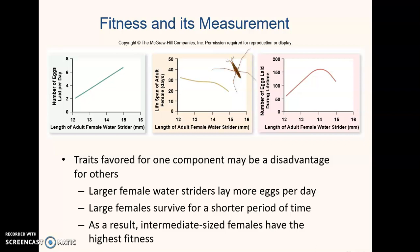A good example is the female water strider. Larger female water striders do lay more eggs per day — the bigger the insect, the more eggs are laid, as shown in the graph on the left. However, larger female water striders survive for a shorter period of time, as seen in the middle graph, where survival steadily decreases as the insect gets bigger. Because these two extremes cancel each other out, intermediate or medium-sized water striders have the highest fitness — they're capable of producing the most eggs, surviving to mate, and laying those eggs.